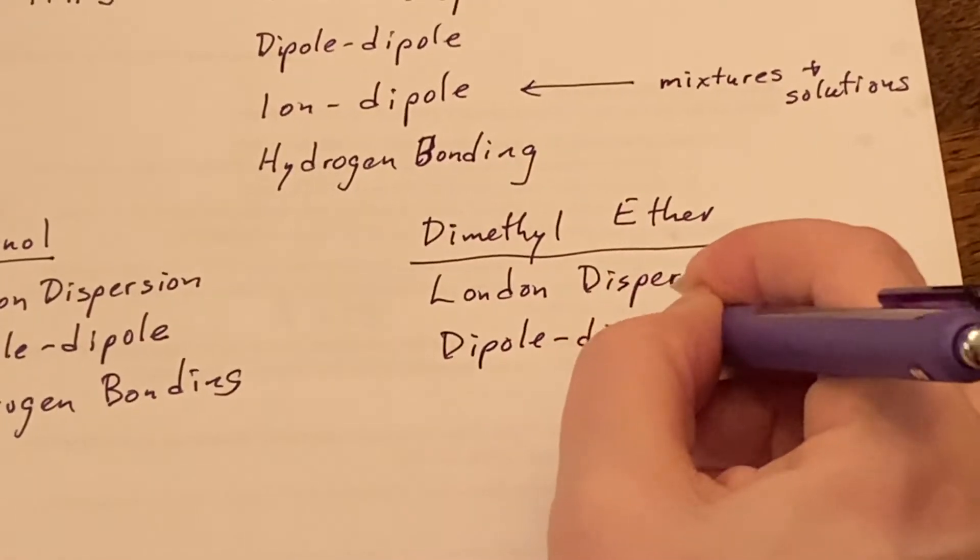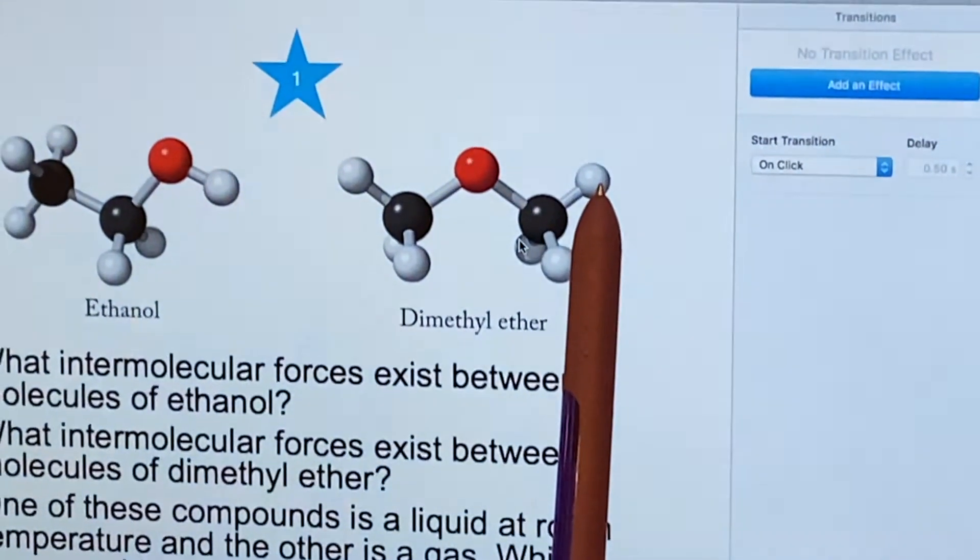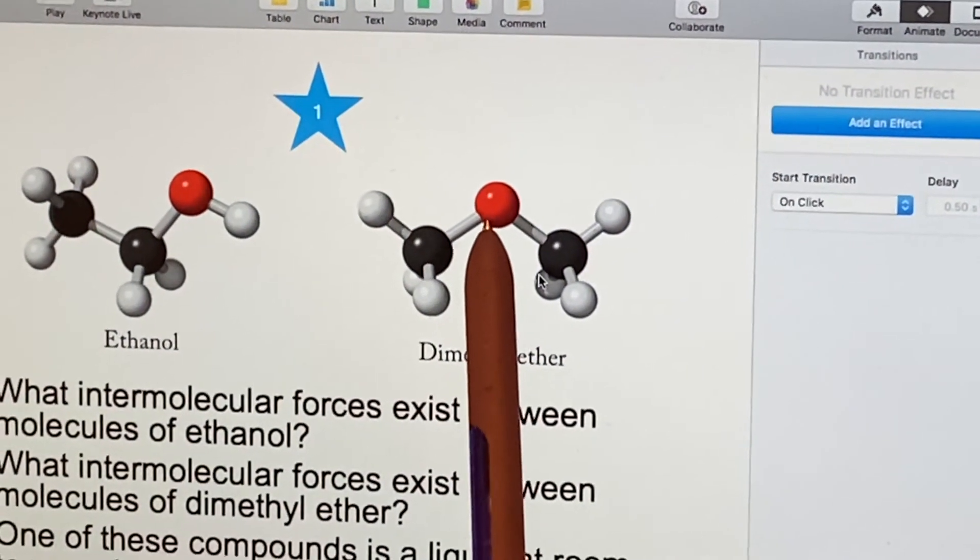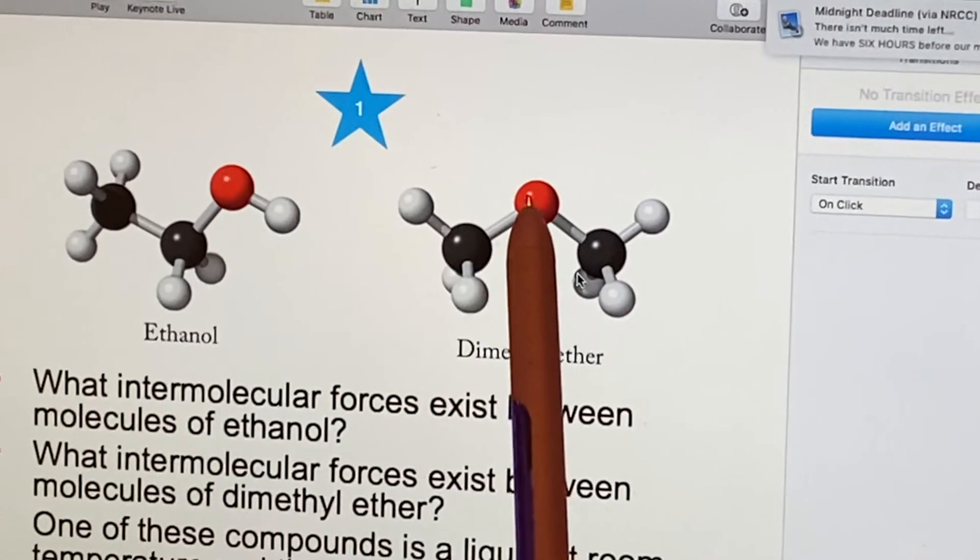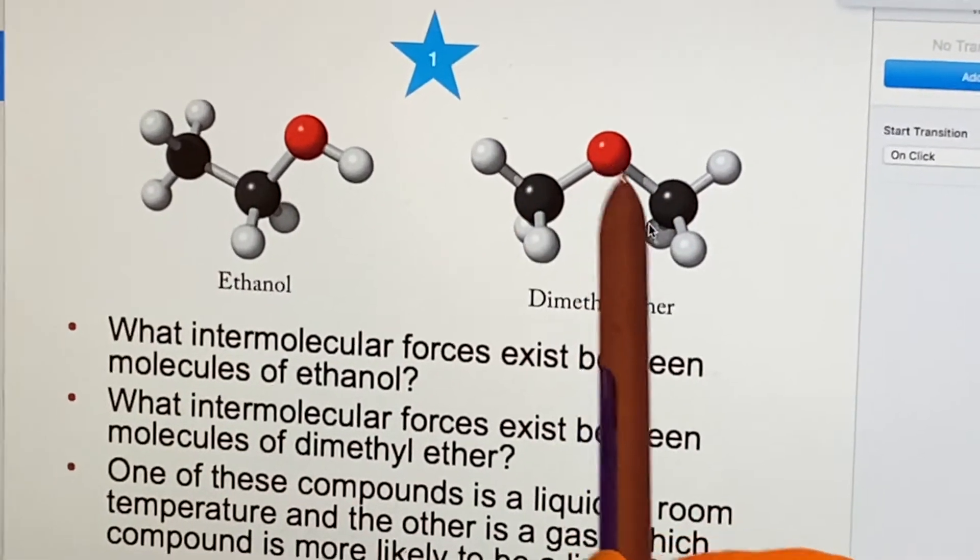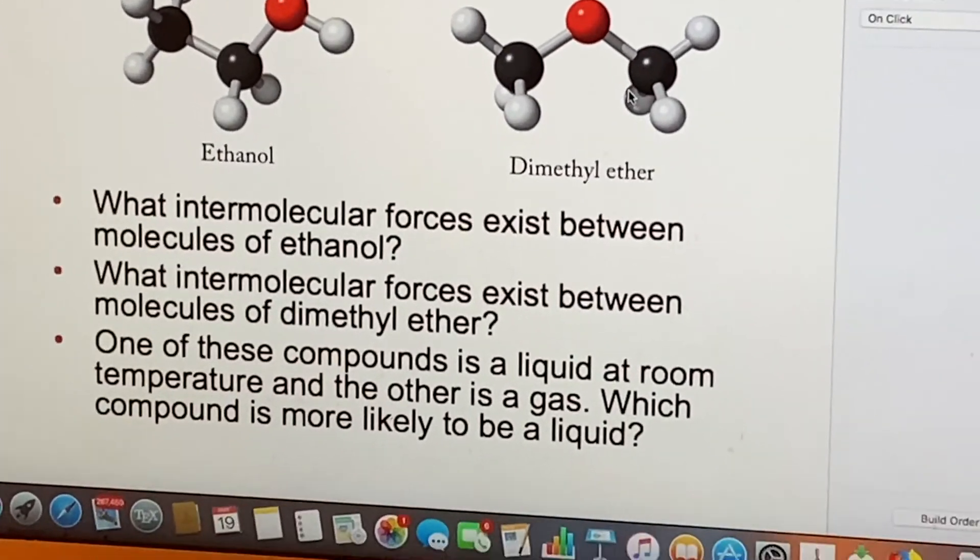but we do not have any hydrogen bonding, because these hydrogens are not bonded to the oxygen. It's only carbon that is bonded to the oxygen. So we do not have hydrogen bonding.